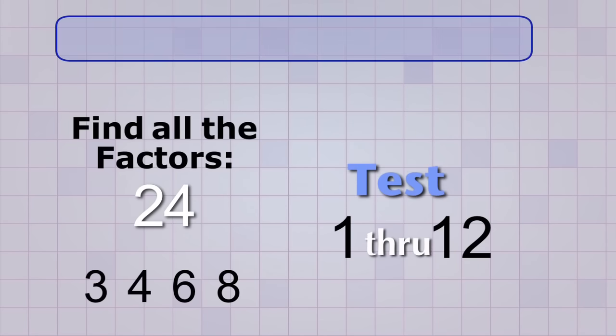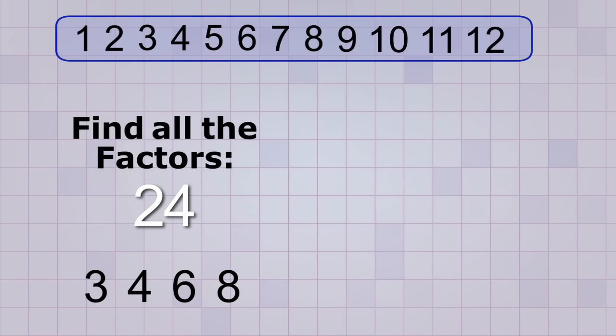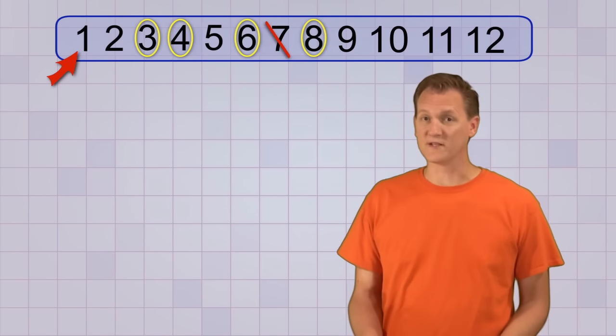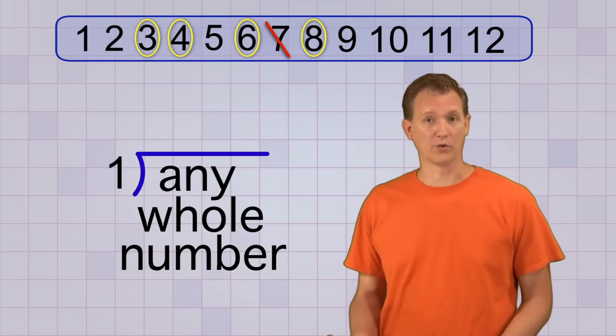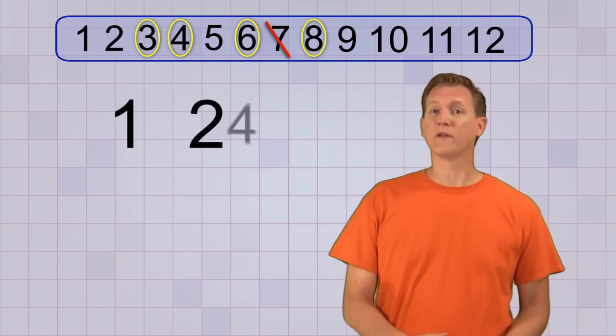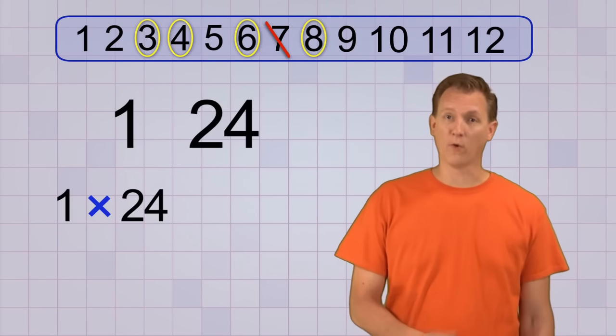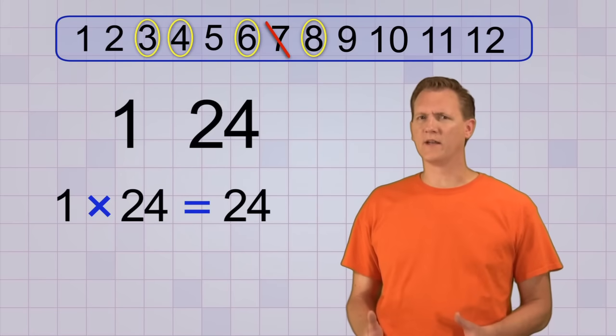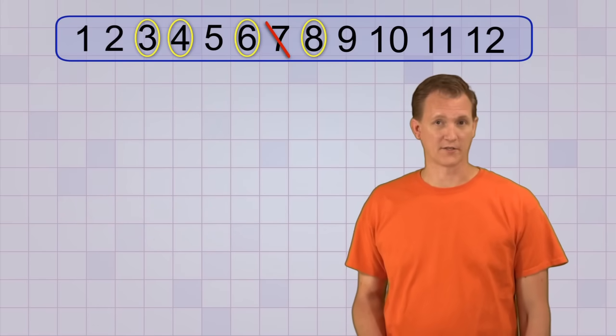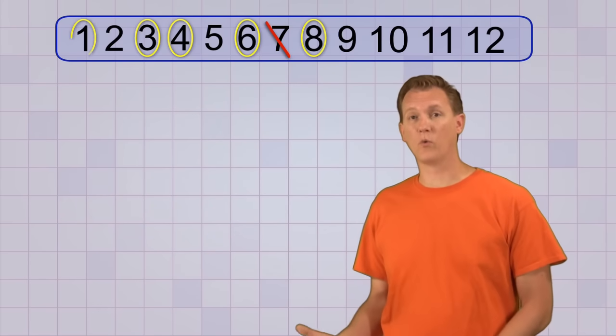To keep things organized, let's list the numbers we're going to test, and we'll circle the factors that we already know. 3, 4, 6, and 8. We can also cross out the 7 since we already tested it and found out it wasn't a factor. Okay, now for the numbers we haven't tested yet. Let's start with 1. Well of course 1 is a factor, because 1 will divide evenly into any whole number, so 1 is always a factor. And since 1 is a factor, then that means that 24 is also a factor, because 1 times 24 equals 24. It might seem weird that a number is always a factor of itself, but it's true. Knowing that helps you get started listing the factors, because you can always include 1 and the number itself.